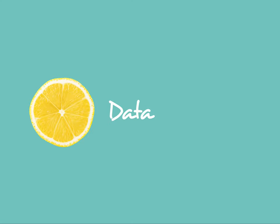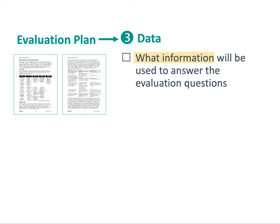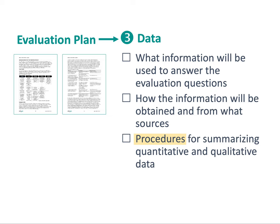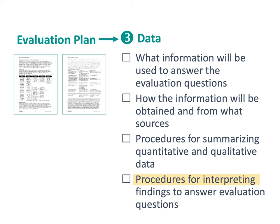When we say data, we're talking about what information will be used and how it will be collected, analyzed, and interpreted. These are distinct things, but we've lumped them together because we can't really talk about one without referring to the others. So in this section of your evaluation plan, you need to describe what information will be used to answer the evaluation questions — these are the indicators — how the information will be obtained and from what sources — this is the data collection method — how the quantitative and qualitative data will be summarized, which is the analysis, and finally how those findings will be used to answer the evaluation questions, which is the interpretation.